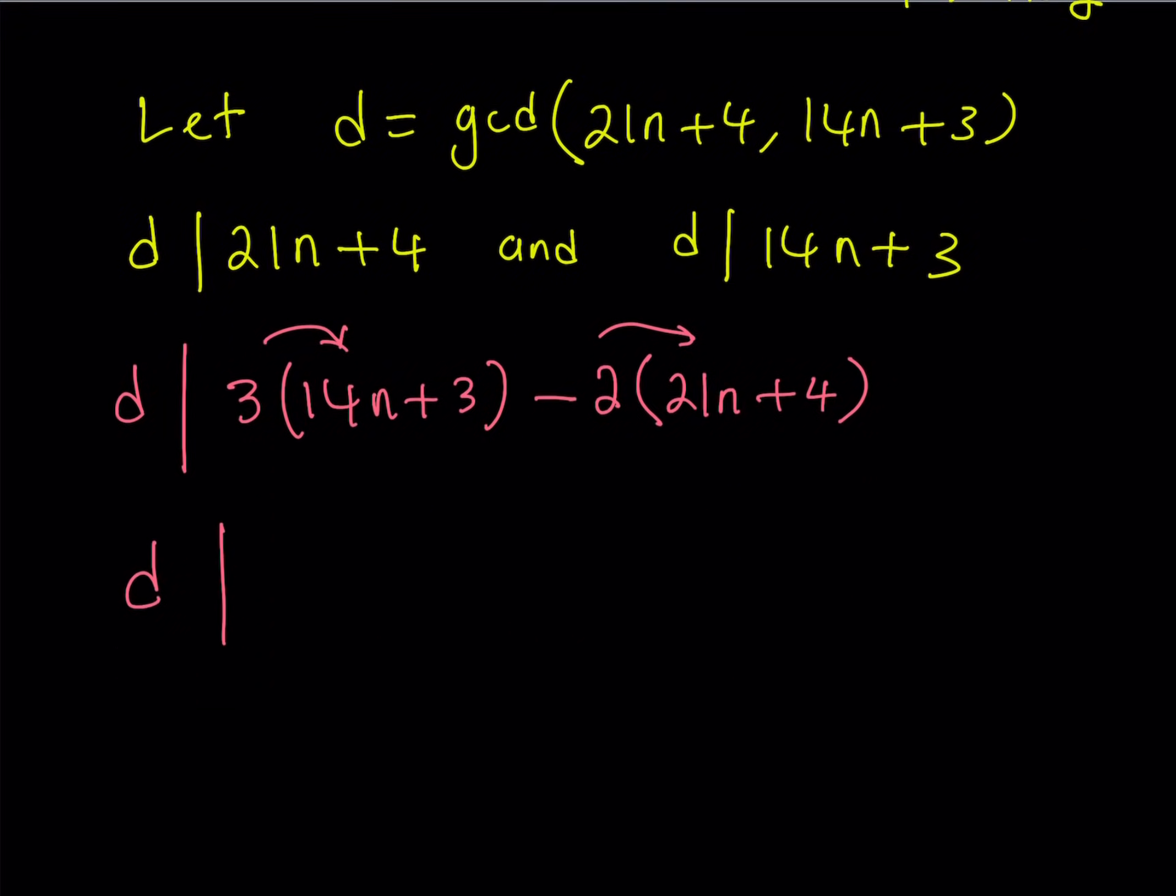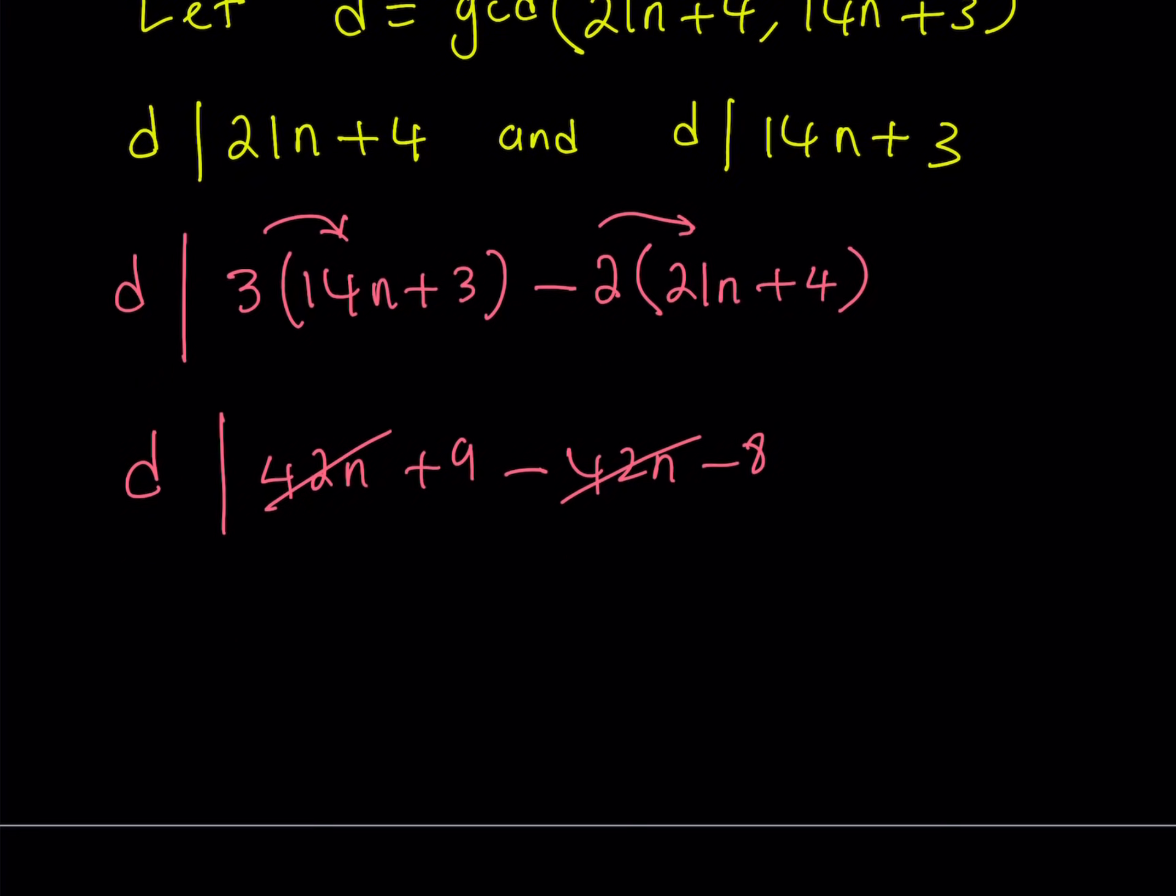This is going to give me d divides 42n plus 9 minus 42n minus 8. Of course, 42n cancels out. And then this gives me d divides 9 minus 8, which is 1. Now you've got to think about it for a minute. d divides 1 means 1 is a multiple of d, but 1 is only a multiple of 1. Therefore, this implies, which is again an important result, if anything divides 1, that needs to be 1 or negative 1.